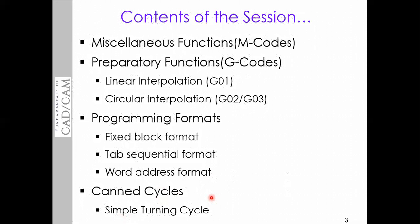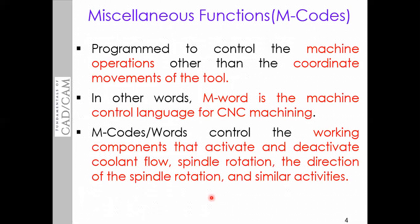Miscellaneous functions are commands programmed to control machine operations, not tool coordinates. These M-codes control the machine itself — spindle rotation, coolant, etc. — but not the coordinate movements of the tool. In other words, the M-word is the machine control language, with specific codes embedded in the main program to control machine activities.